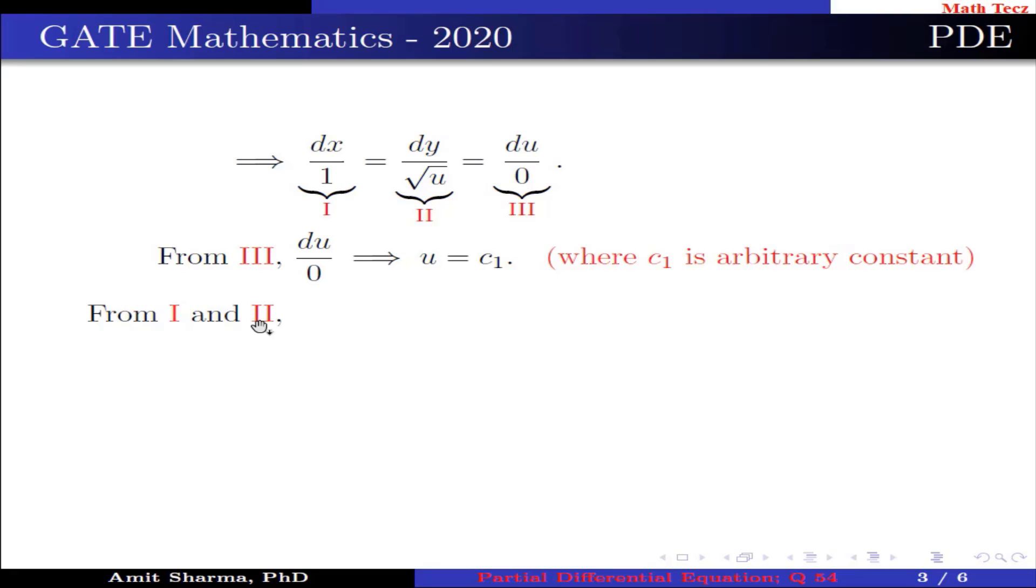From 1 and 2 we have dx/1 = dy/√u which implies dx/1 = dy/√c₁ because u is c₁, which is further written as √c₁ dx - dy = 0.